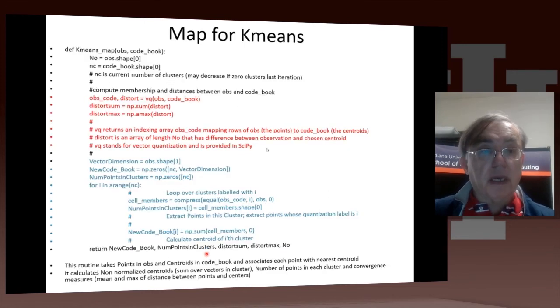Here now we come to def kmeans_map. It's actually very similar to the ordinary k-means code. It's actually slightly simplified. Here we do the call to VQ, vector quantization, to associate the points. This is only the points in each process to the centers, or rather to the clusters.